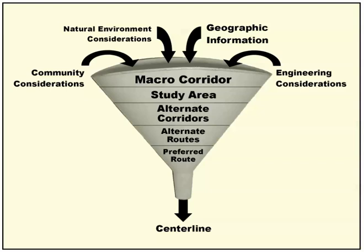The information derived from each of these considerations is put into a geographic information system to determine values and weights for each of the considerations. As we move down through the funnel, the area of interest becomes more focused and defined, and the data become more detailed and accurate.